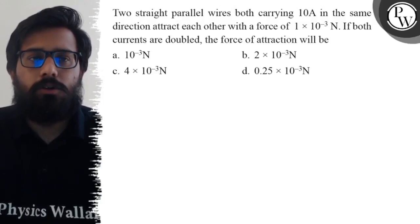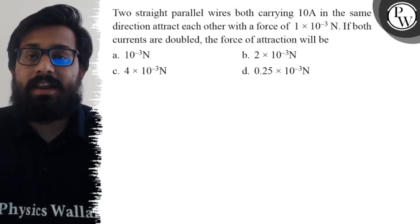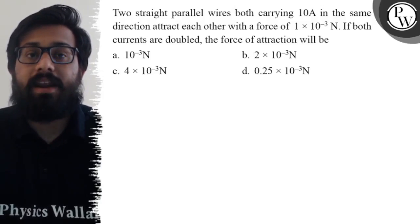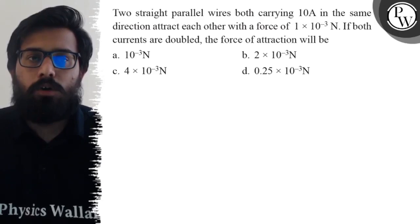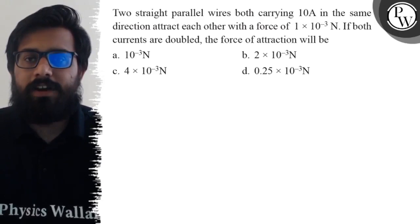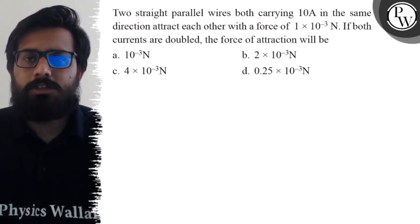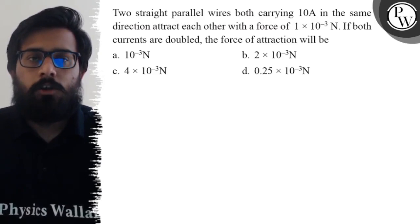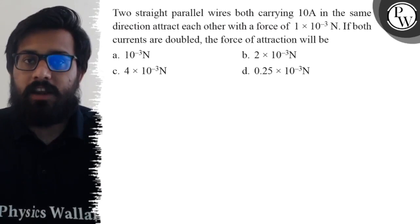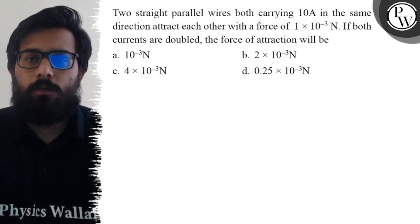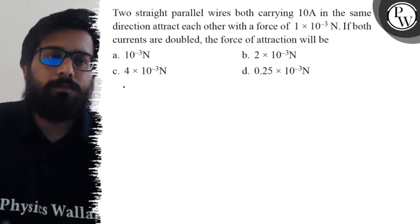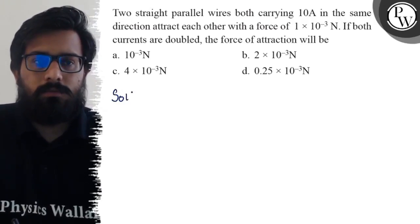Hello bachos, let's see the question. Two straight parallel wires both carrying 10 ampere in the same direction attract each other with a force of 10 to the power minus 3 newton. If both currents are doubled, the force of attraction will be — option 1: 10⁻³ N, option 2: 2×10⁻³ N, option 3: 4×10⁻³ N, option 4: 0.25×10⁻³ N.